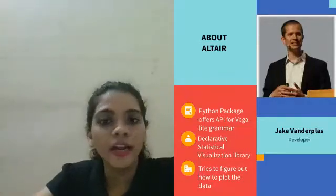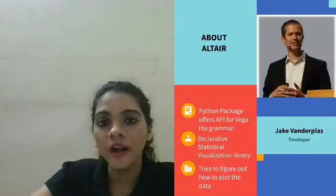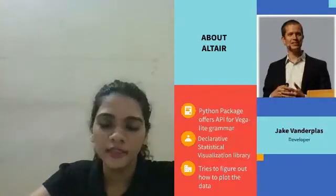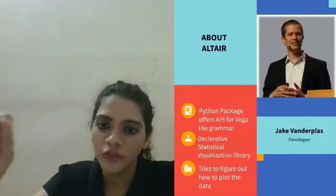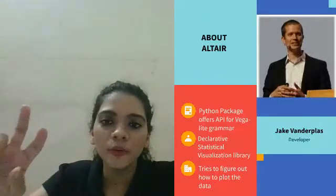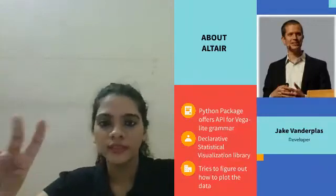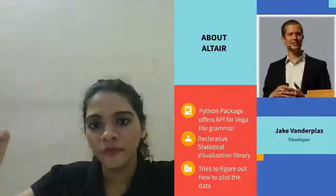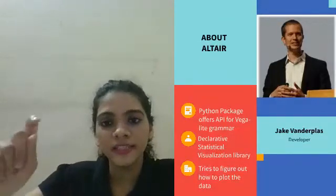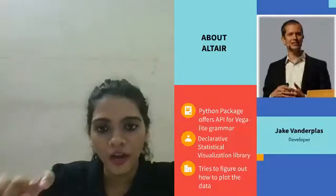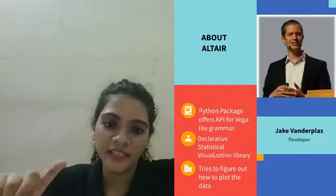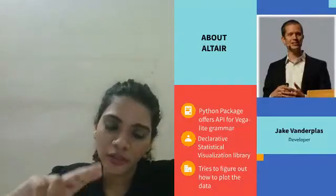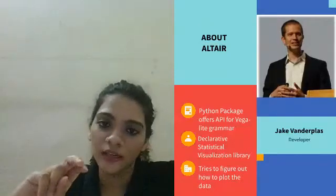This is actually based on Vega-Lite grammar and derives its features from there. Vega-Lite is based on JSON grammar for visualization. We will be working with Altair in upcoming videos, and I'll tell you how it takes data from Vega and works on it.